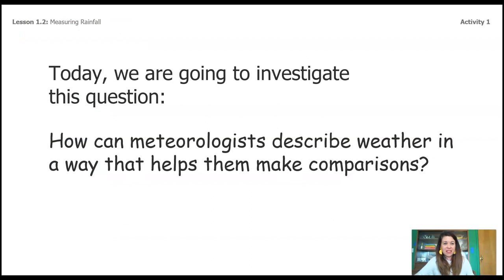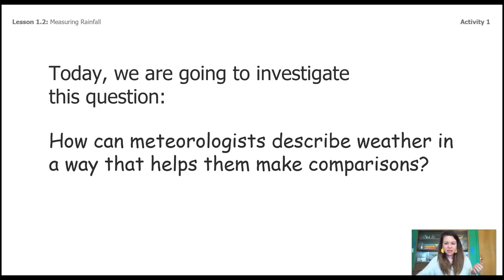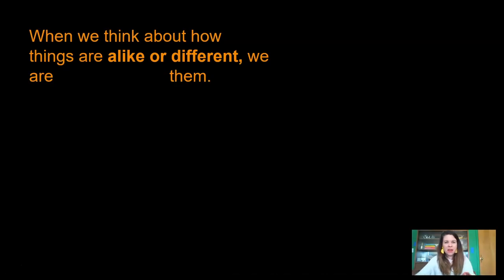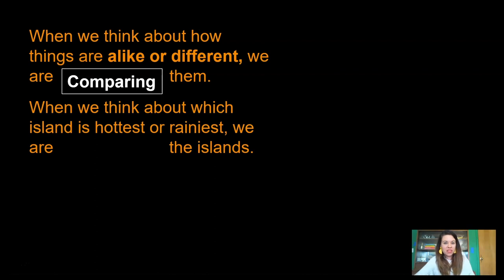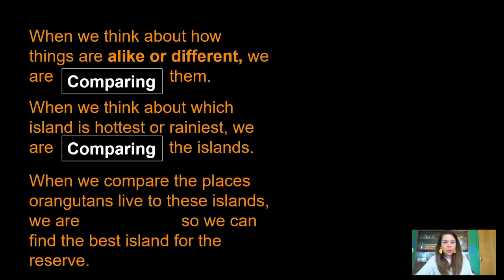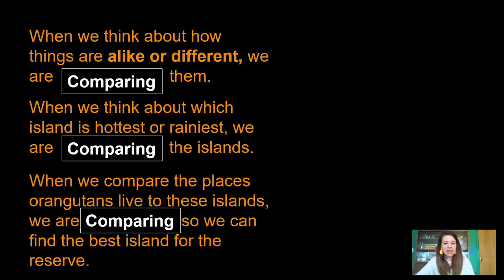Today we're going to investigate this question: How can meteorologists describe weather in a way that helps them make comparisons? When we think about how things are alike or different, we are comparing them. When we think about which island is hottest or rainiest, we are comparing the islands. When we compare the places orangutans live to these islands, we are comparing so we can find the best island for the reserve.